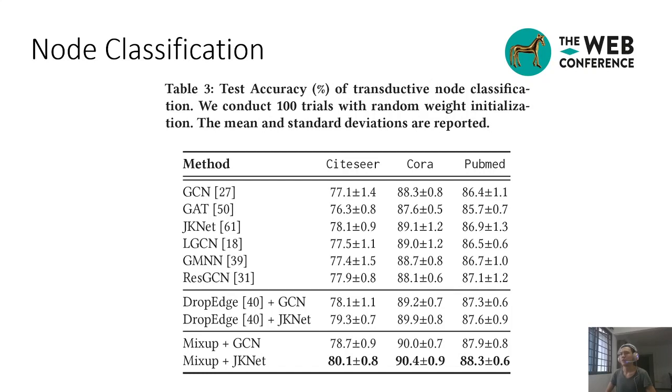In the transductive node classification, the results are reported in this table. We observe that our two-stage mixup method enhances GCN and JKNET to outperform all the baseline methods. In the inductive settings, the similar phenomenon is observed.